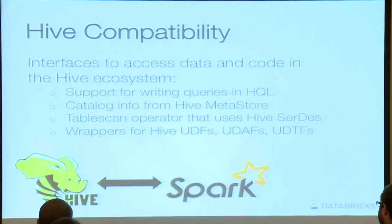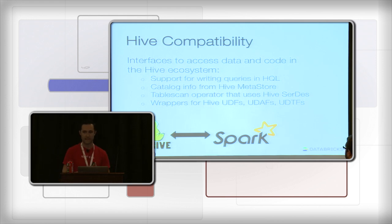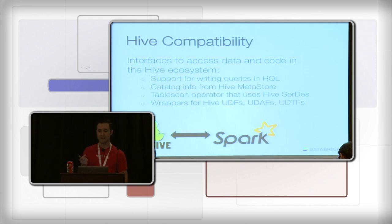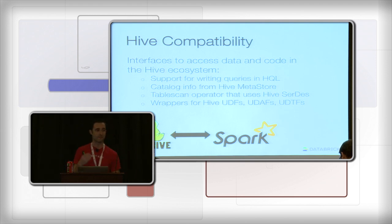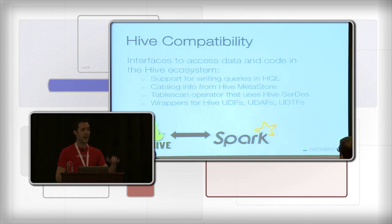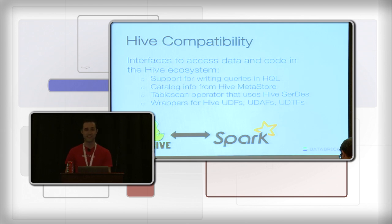An incredibly important part of getting data into Spark SQL is Hive compatibility. We have interfaces to access data and code in the existing Hive ecosystem. You can write queries in HQL, we support the transform clause for scripts executed as SQL results, and we get catalog info from the Hive Metastore — just drop your hive-site XML into the configuration directory and we automatically find all your tables. We support reading data using all Hive SERDs including custom ones. If you've invested in UDFs, UDAFs, or UDTFs, we have wrappers to convert those into Spark SQL UDFs right out of the box — meaning all existing Hive UDFs are usable, giving this young project a fairly full-featured ecosystem already.